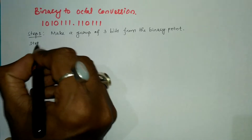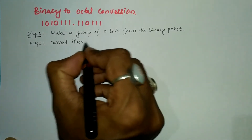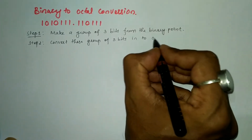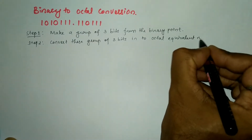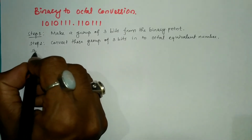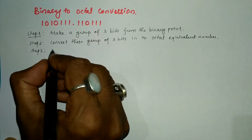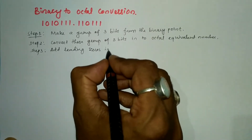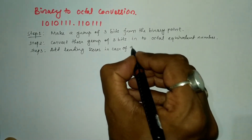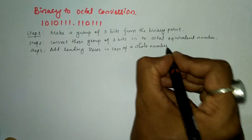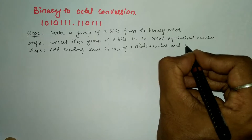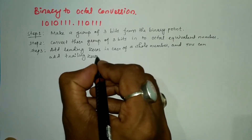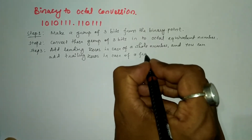Step two: convert these groups of three bits into the octal equivalent number. Step three: you can add leading zeros in the case of a whole number, and you can add trailing zeros in the case of a fractional number.